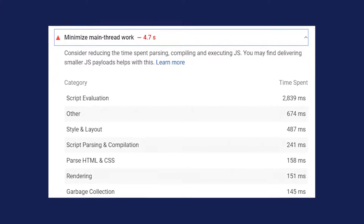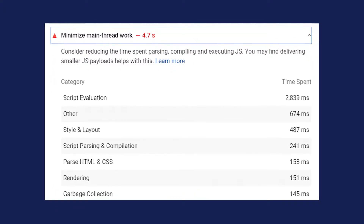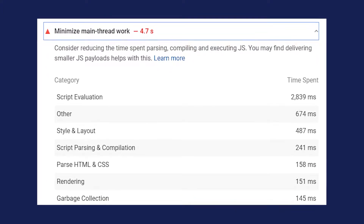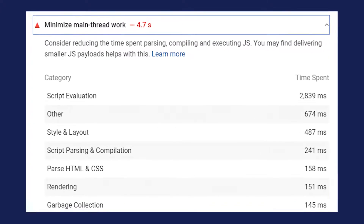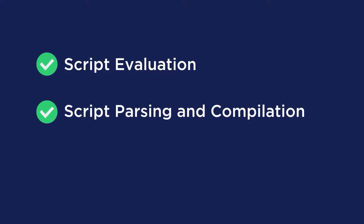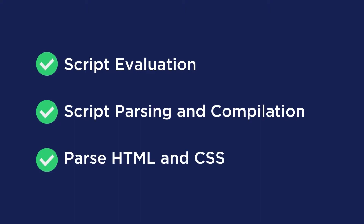What you'll see is that this recommendation is split into seven different sections, so you can see which category has the most impact on your performance. Out of these seven different sections, there are three that you can improve the most: script evaluation, script parsing and compilation, and parse HTML and CSS. These sections are related to parsing and executing the code, which is when the main thread gets busy if it encounters any render-blocking resources.